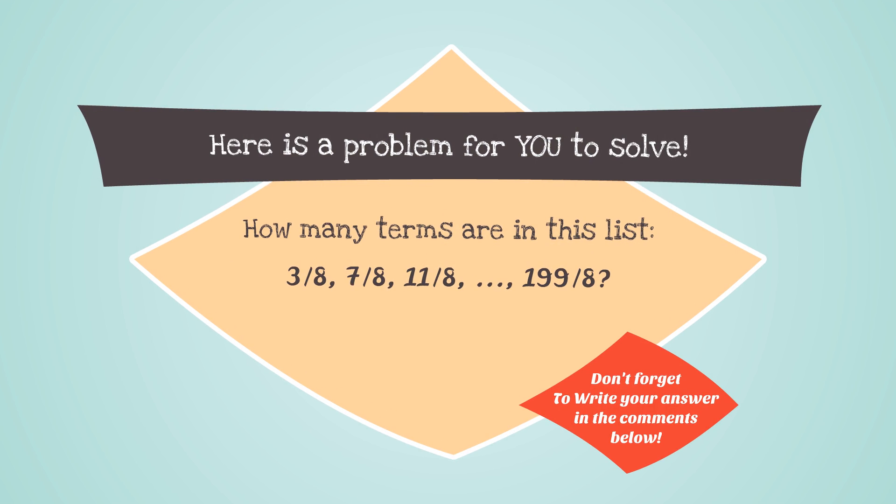Here's the problem for you to solve. How many terms are in this list? 3 eighths, 7 eighths, 11 eighths, and so on. All the way to 199 over 8. Don't forget to write your answers in the comments below to check if you were correct.